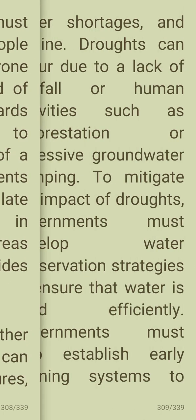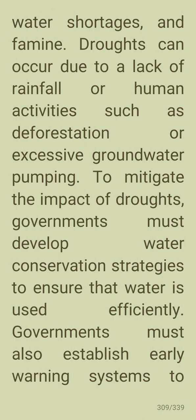Governments must also regulate human activities in landslide-prone areas to prevent landslides from occurring. Droughts are another natural hazard that can result in crop failure, water shortages, and famine. Droughts can occur due to lack of rainfall or human activities such as deforestation or excessive groundwater pumping.